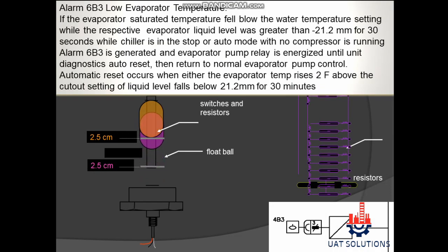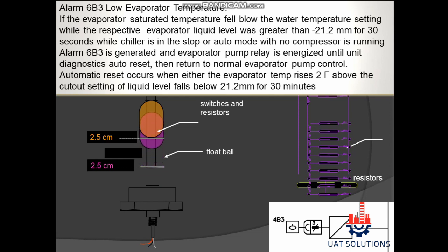Alarm 6B3 — Low Evaporator Temperature: If the evaporator saturated temperature falls below the water temperature setting while the respective evaporator liquid level was greater than minus 21.2 millimeters for 30 seconds, while the chiller is in stop or auto mode with no compressor running, alarm 6B3 is generated and the evaporator pump relay is energized until unit diagnostics auto reset, then returns to normal evaporator pump control.